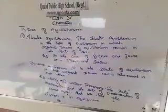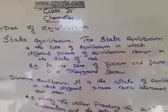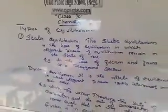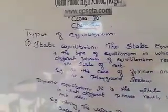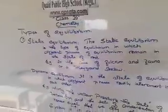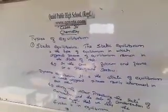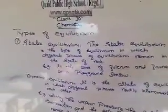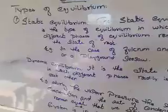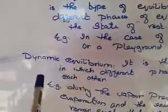Static equilibrium is that type of equilibrium in which the body cannot be changed. When you apply a force or an external gravitational force on it, it cannot be changed — its position remains the same. That is called static equilibrium.